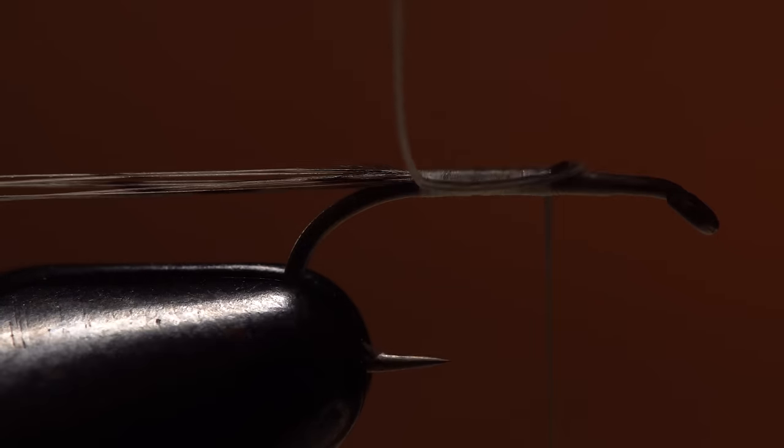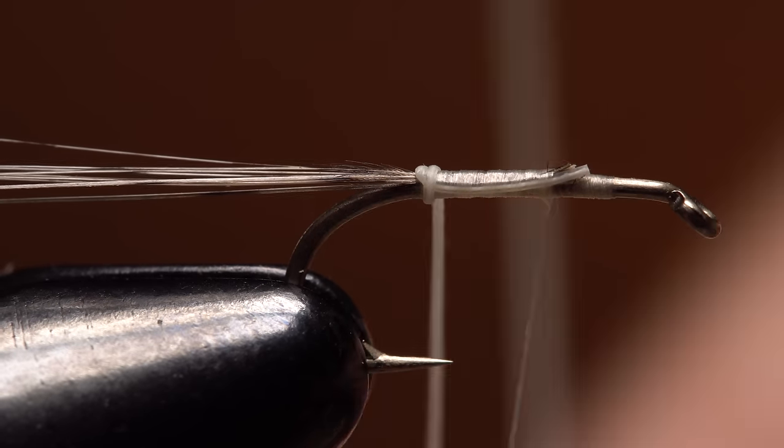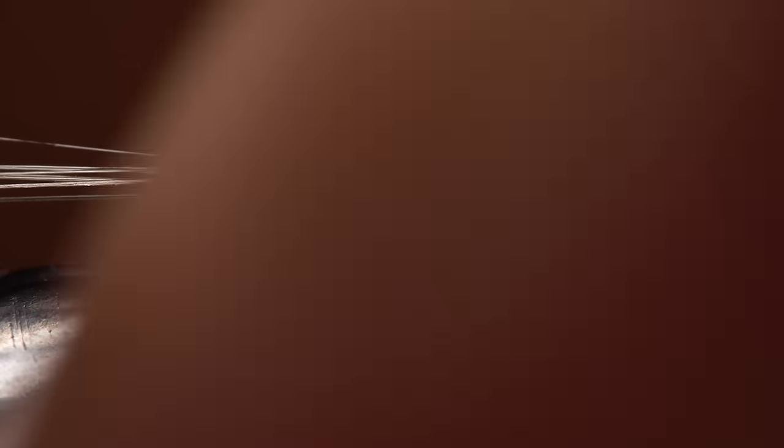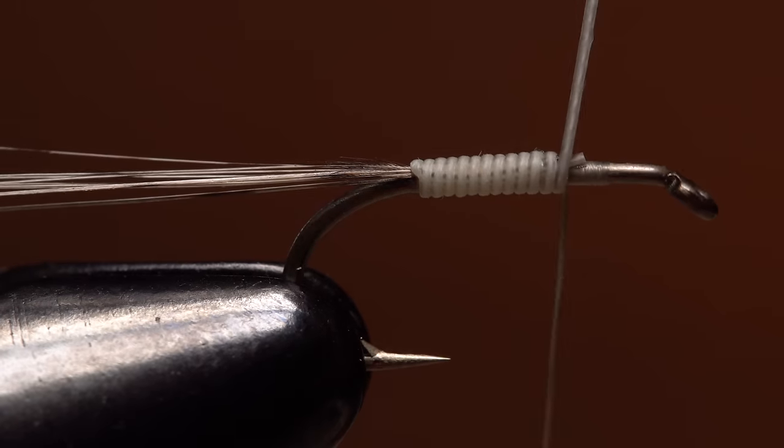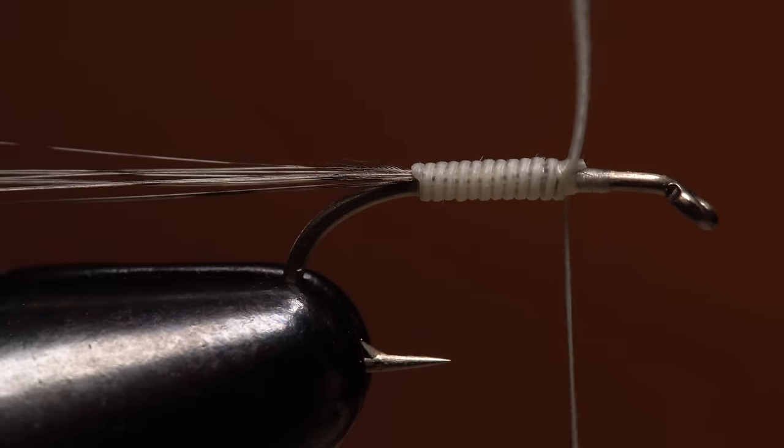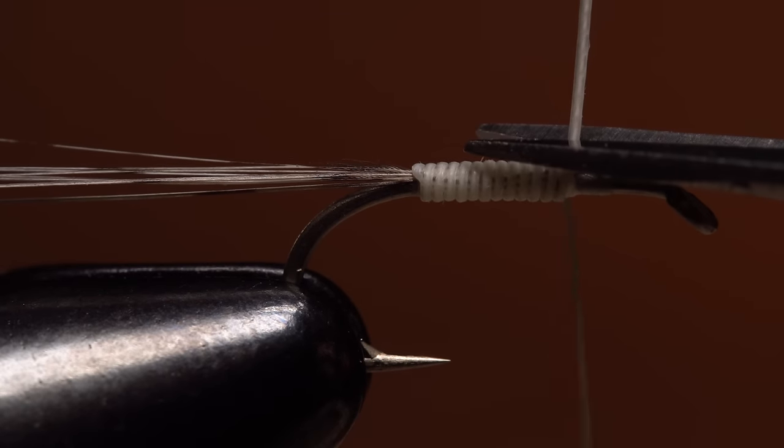Get hold of the hackle stem and start making touching wraps with it up the hook shank to create a wonderfully segmented, thin body. When you reach your tying thread, use it to secure the stem to the hook shank and then snip the excess off close.